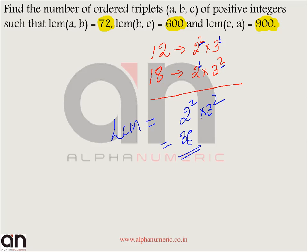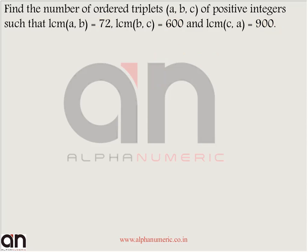Let us see how to solve this particular question. It says LCM of A and B is 72. So I first factorize 72: 72 is nothing but 2 cubed into 3 squared.